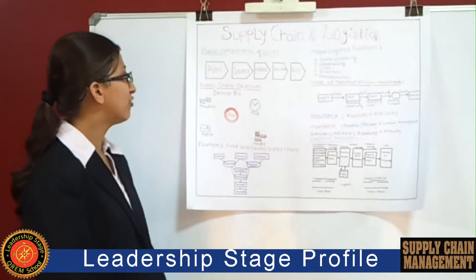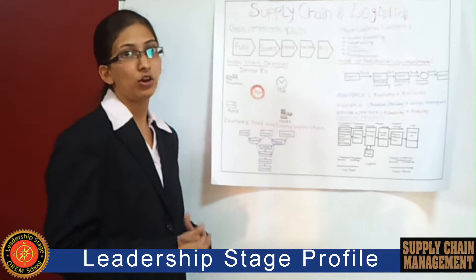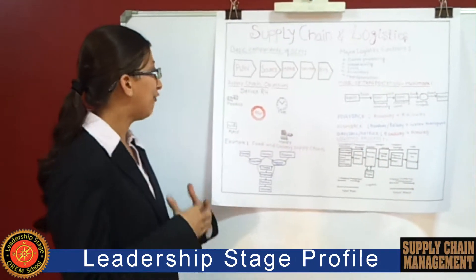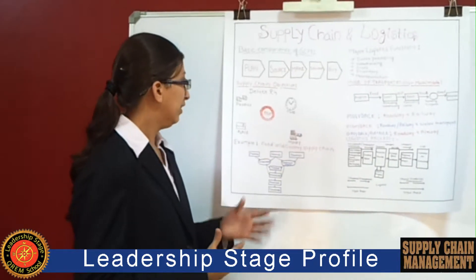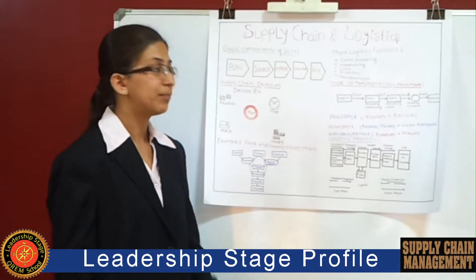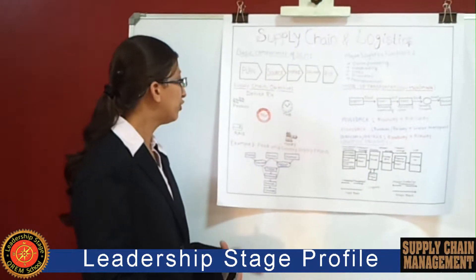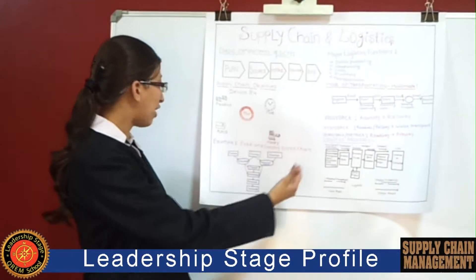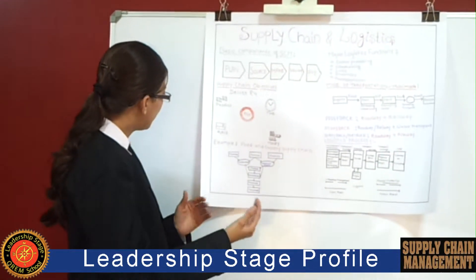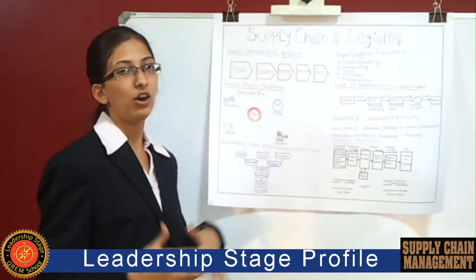The main supply chain objective is to deliver the right product at the right place, in the right time, and at the right cost. If you have the capability of doing that, it's a good supply chain, because every person demands a good product in a good place at a good time and wants proper money to be paid for that good. For example, when grocery goods are brought from the supplier — from farmers — the farmer sends it to the agents, from agents to the manufacturer, from manufacturer to retailer, and finally the product reaches the customer or consumer.